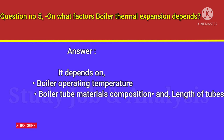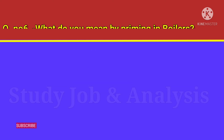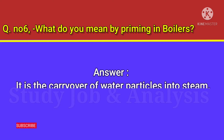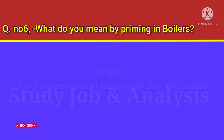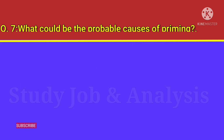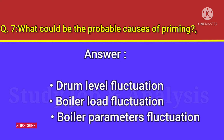Question number six: what do you mean by priming in boilers? Answer: It is the carryover of water particles into steam. Question number seven: what are the probable causes of priming? Answer: Drum level fluctuation, boiler load fluctuation, and boiler parameters fluctuation.